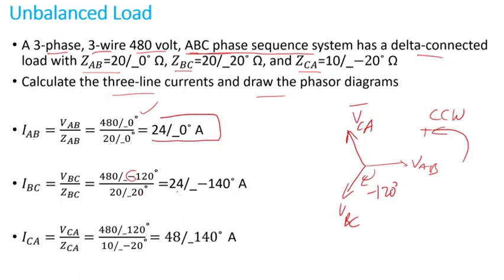So I_CA is V_CA divided by Z_CA. Again, V_CA leads actually V_AB by 120 degrees, so that's what you see here. So I get 48 amps with an angle of 140 degrees.